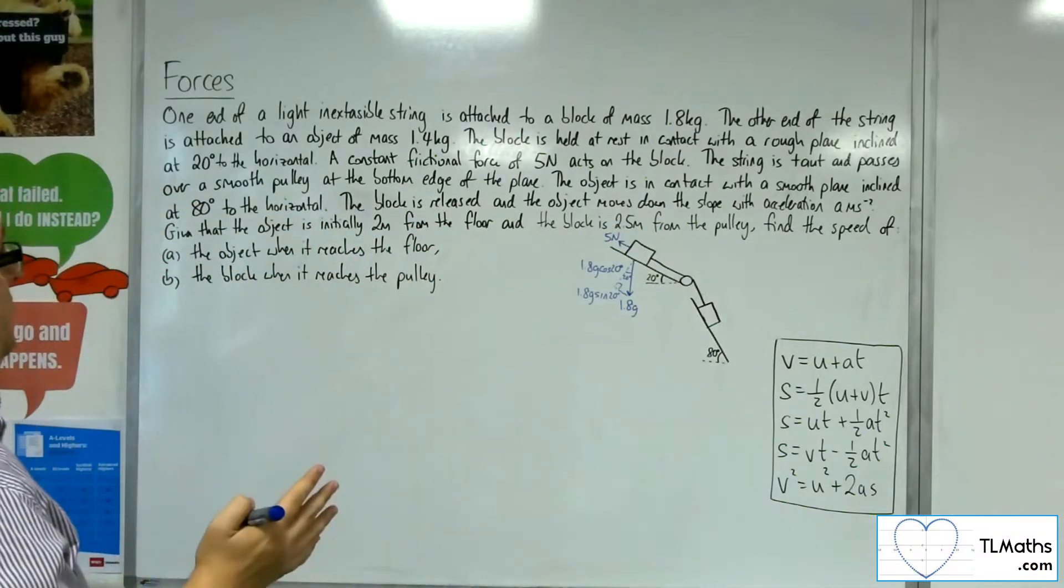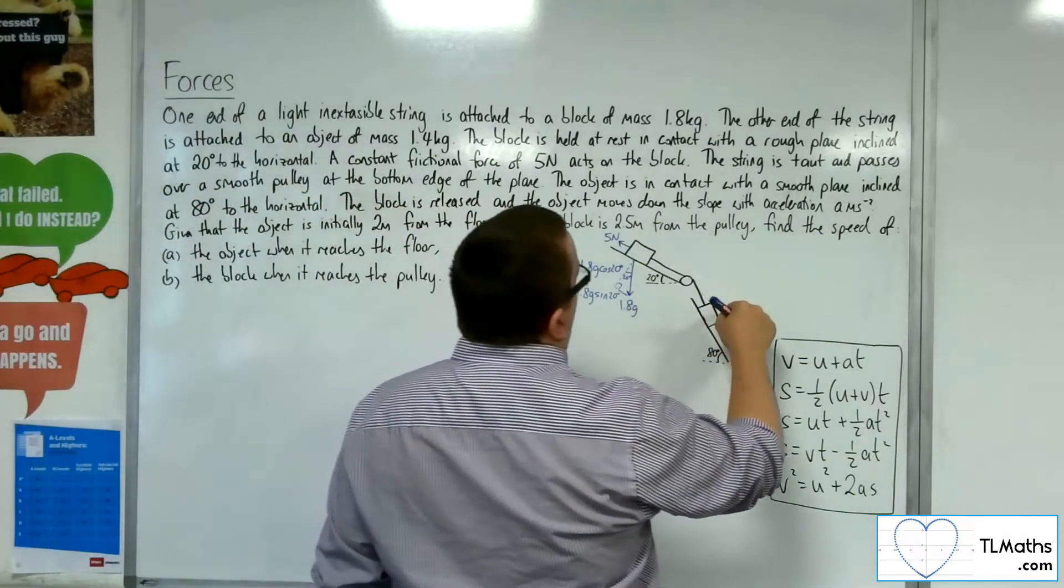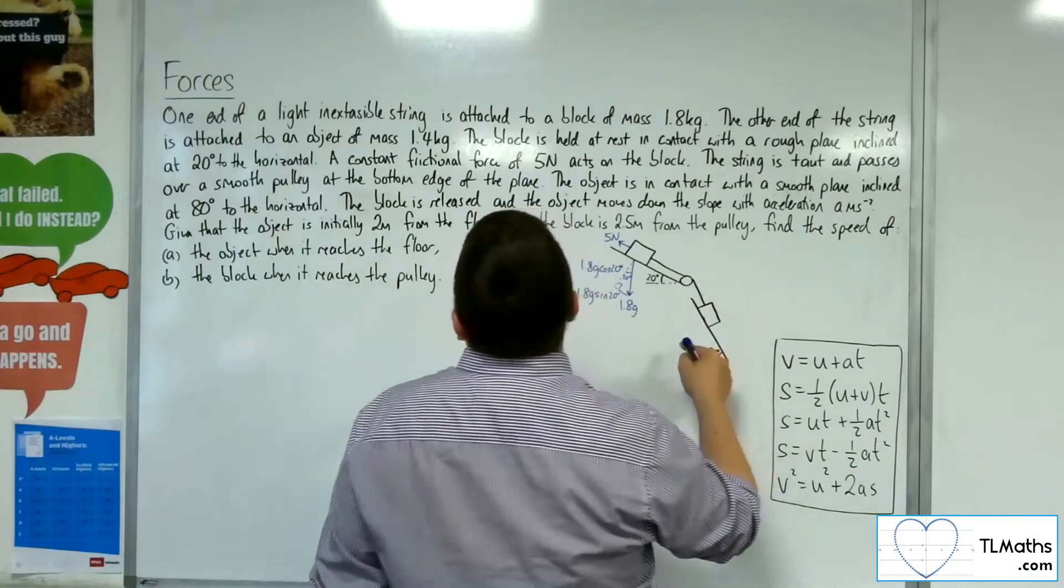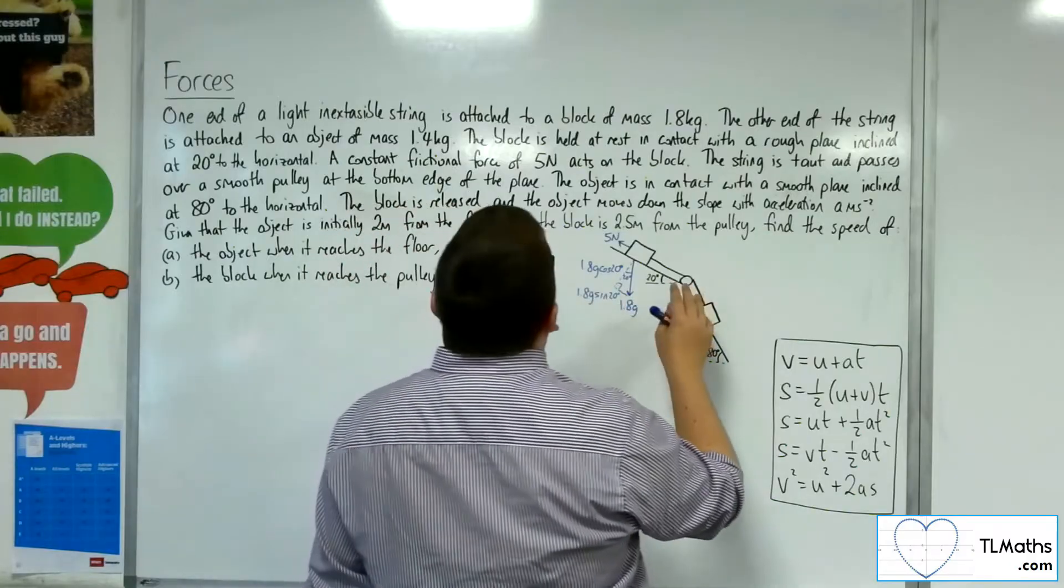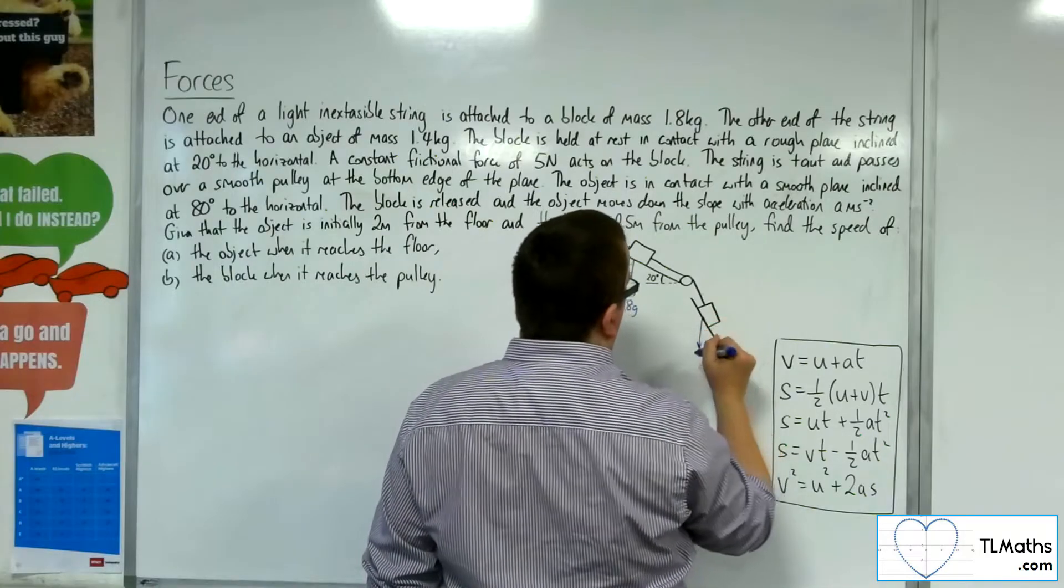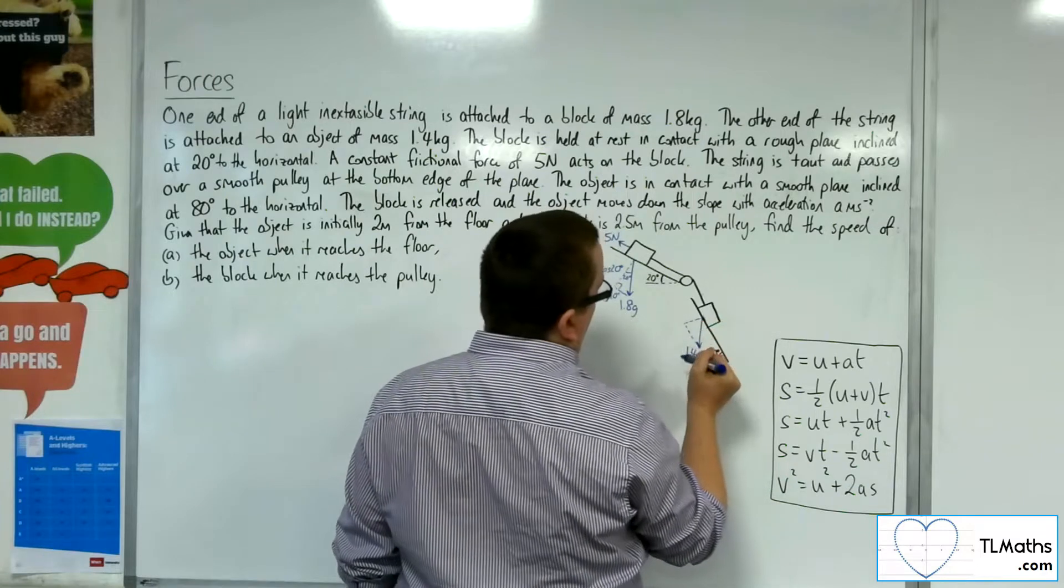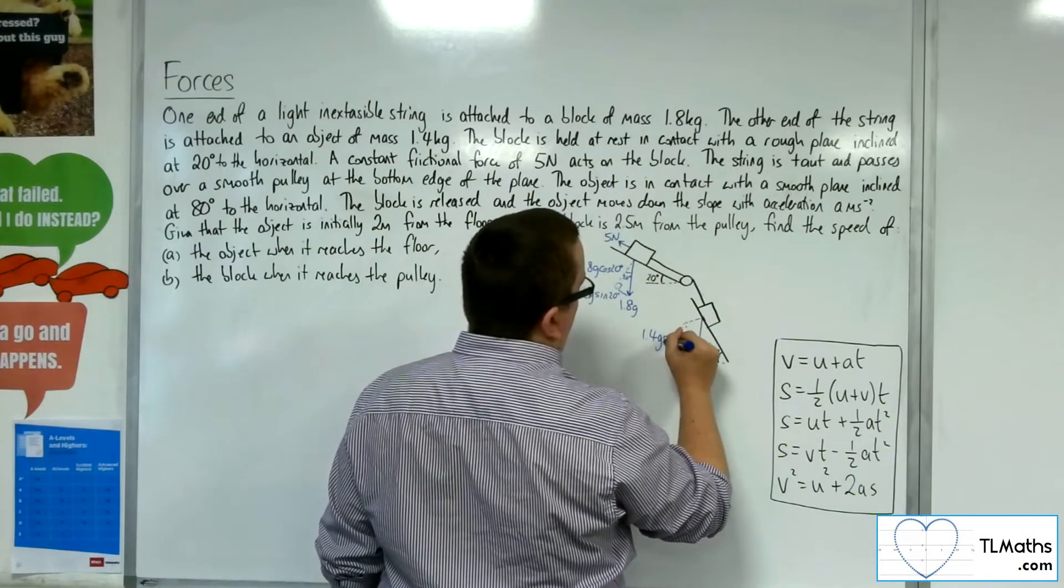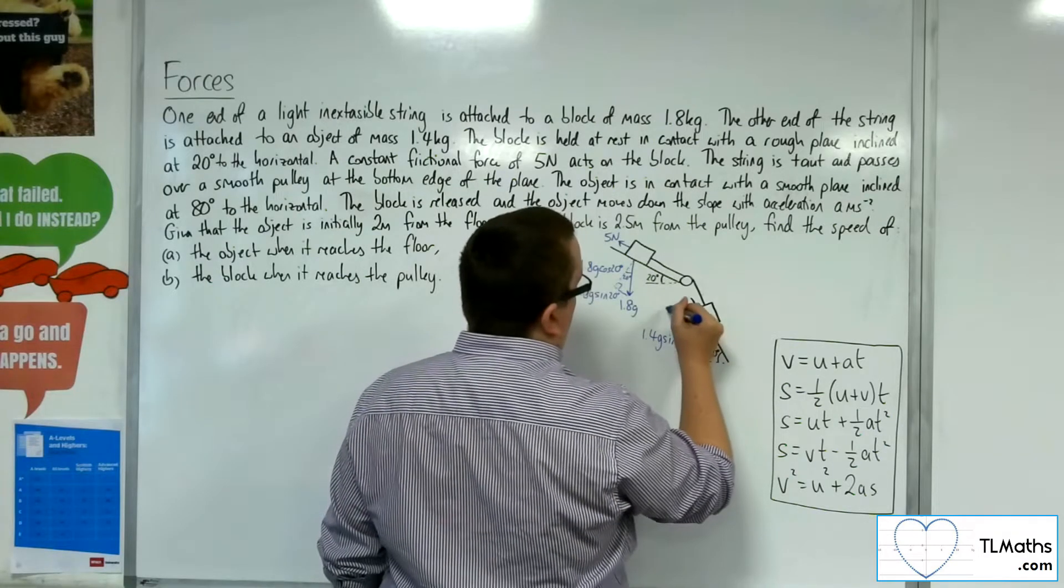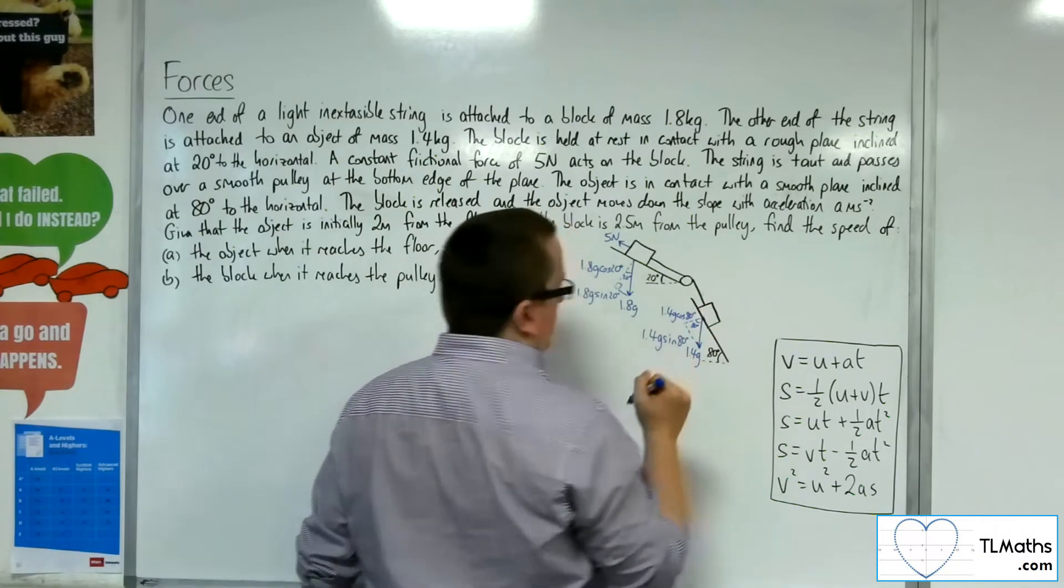The string is taut and passes over a smooth pulley at the bottom edge of the plane. The object is in contact with a smooth plane, so there's no friction on this plane, inclined at 80 degrees to the horizontal. This is the one with 1.4 kilos. Its weight works directly downwards, 1.4g. Dividing into component parts: 1.4g sine 80 degrees and 1.4g cosine 80 degrees.